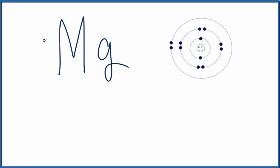To write the Lewis structure for Mg, we can just put 1, 2, and there we have it. That's the Lewis structure for Mg.